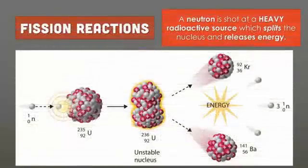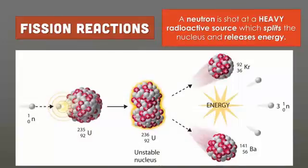In a fission reaction, you have a neutron, and it is shot at a heavy radioactive source. When we say heavy, that means its mass number is big. So in this example, we use uranium-235. When that neutron hits the uranium-235, it splits, and it splits into krypton and barium, and in the process it releases a tremendous amount of energy. So the biggest thing to take from this is that one large mass breaks up into two or more smaller masses.